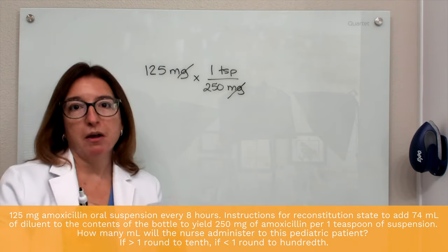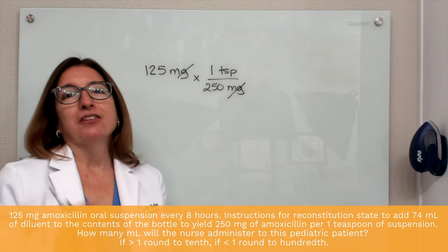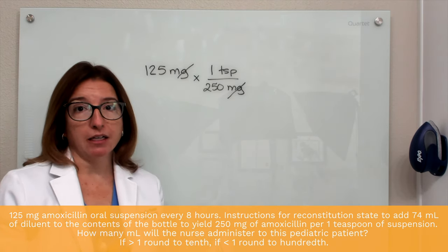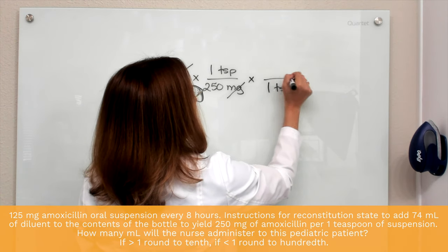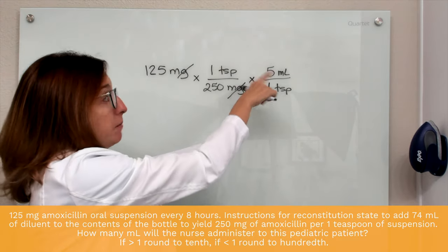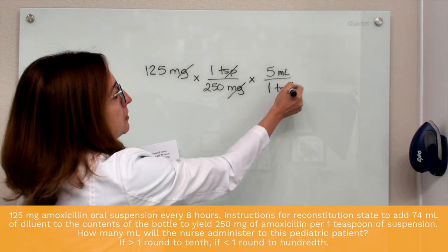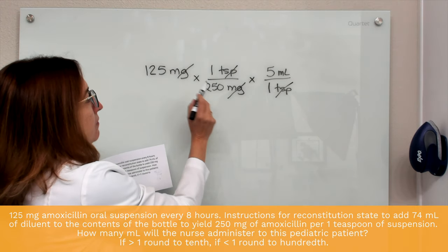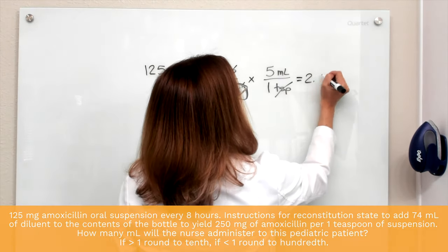We're going to be left with teaspoons, but that's not what they're asking for — they are asking for how many milliliters will be administered. So that's where we need our conversion factor. We know that one teaspoon equals five milliliters, so we multiply again by that conversion factor with milliliters on top, because that's what we want to end up with. Our teaspoons cancel out and we're left with milliliters. Taking 125 divided by 250 gives 0.5, times five, and we end up with 2.5 milliliters.